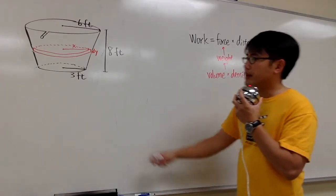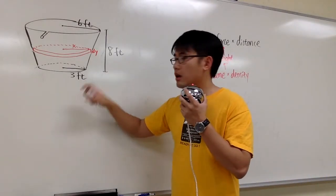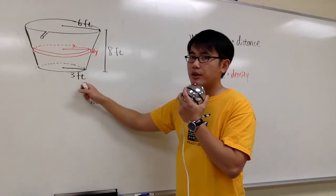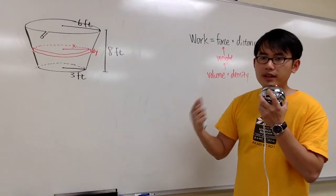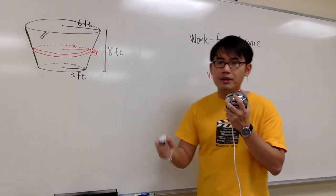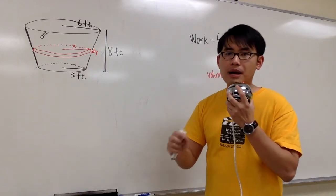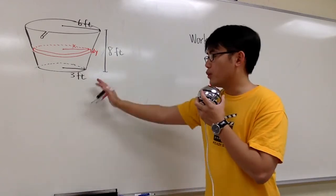The density depends on the units that we're using. Notice that we are using feet right here, the US unit, so we have to look at the weight density of the water, which is going to be 62.5 pounds per cubic foot, but we can worry about that later.